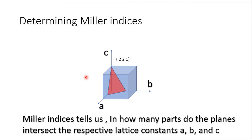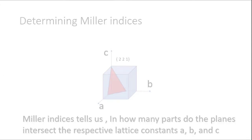Toh ye 2, 2, 1 se humare paas information mil rahi hai ki aapke paas jo edge length a hai, usko ye wala red plane two parts mein divide kar raha hai. Ye first index show kar raha hai ki aapke paas a edge length, jo lattice constant a hai, wo dho parts mein is plane se divide ho raha hai. Similarly aapke paas jo second index hai, ye 2, show kar raha hai ki b wali length — b lattice constant — wo plane se 2 parts mein divide ho raha hai. Third information aapka l se value mein, l yahan pe one hai, it means ye wala plane aapke c ko one part mein divide ho raha hai.